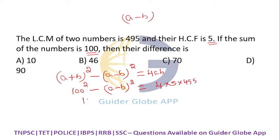On this side, it will come to 10,000 minus (a-b)².